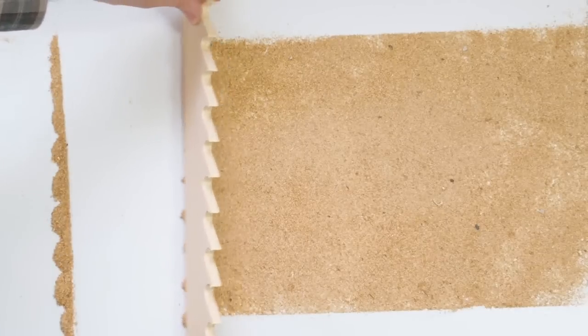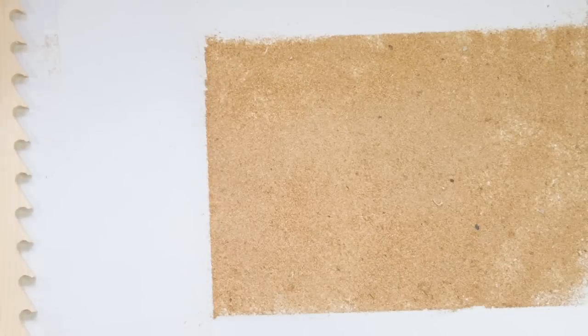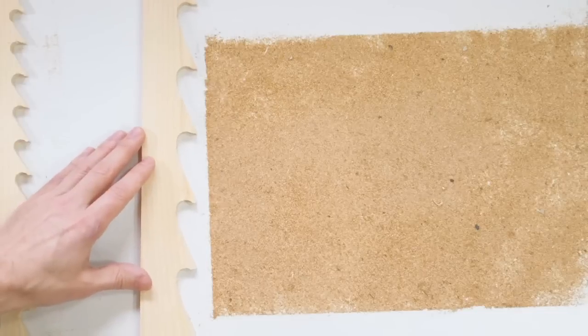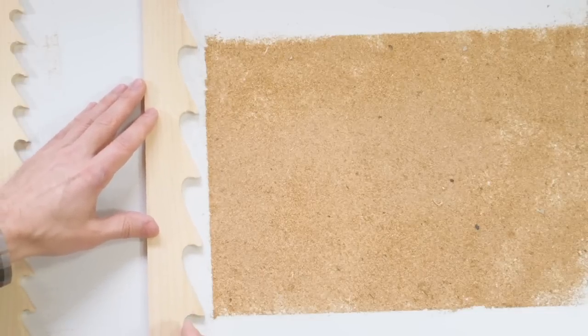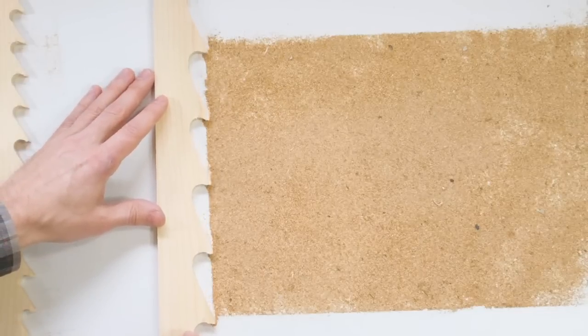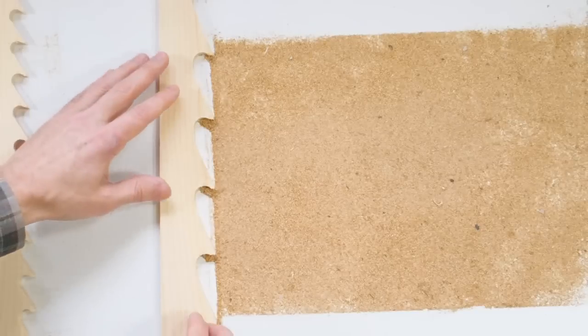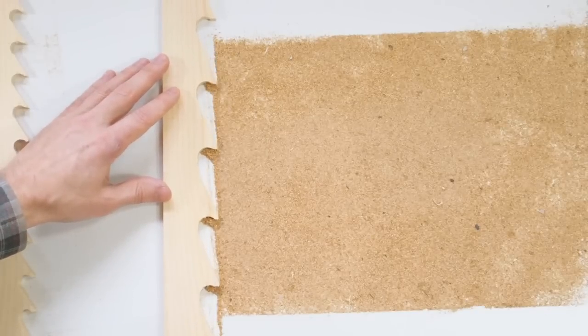A better solution is to just use a bandsaw blade that has a lot fewer teeth. So here's a blade with half as many teeth. And now, for the same amount of engagement for each tooth, we have enough space between the teeth to actually carry away the sawdust.